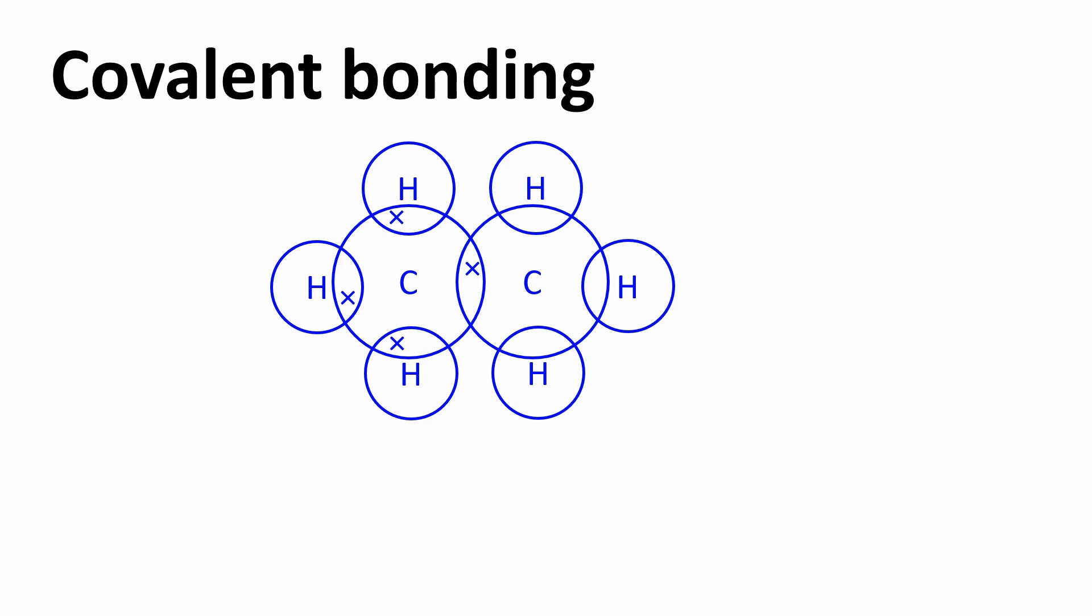We're going to take a look at some quick questions involving ethane, an organic molecule, and find out more about how bonding pairs of electrons influence the shape of this molecule. Let's get started.